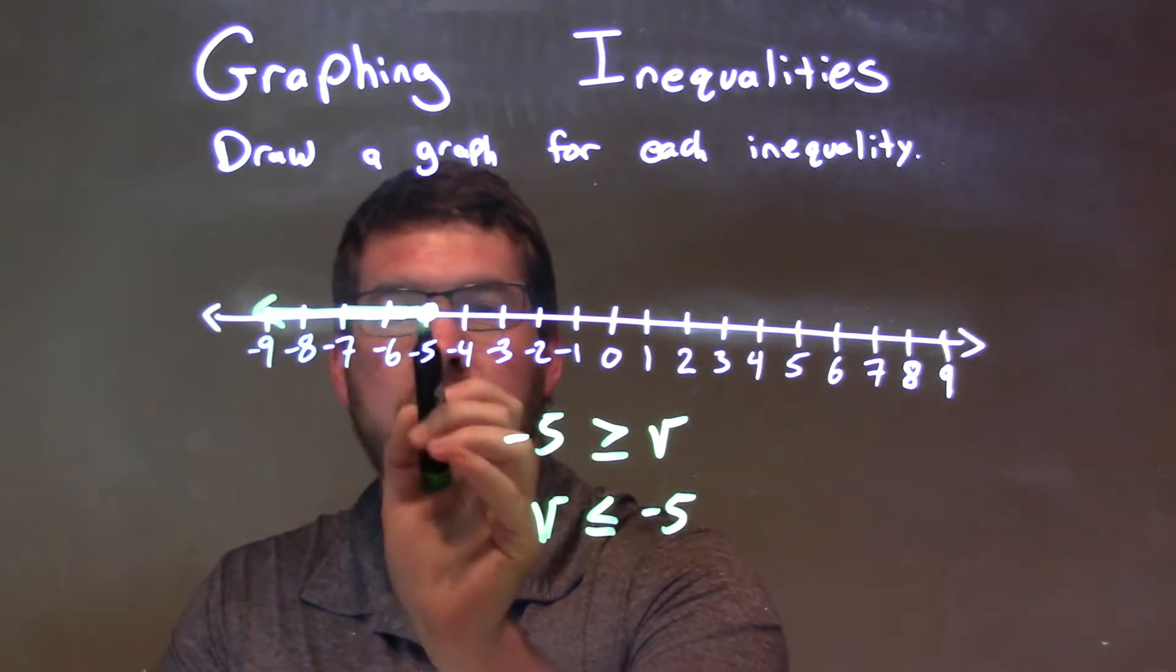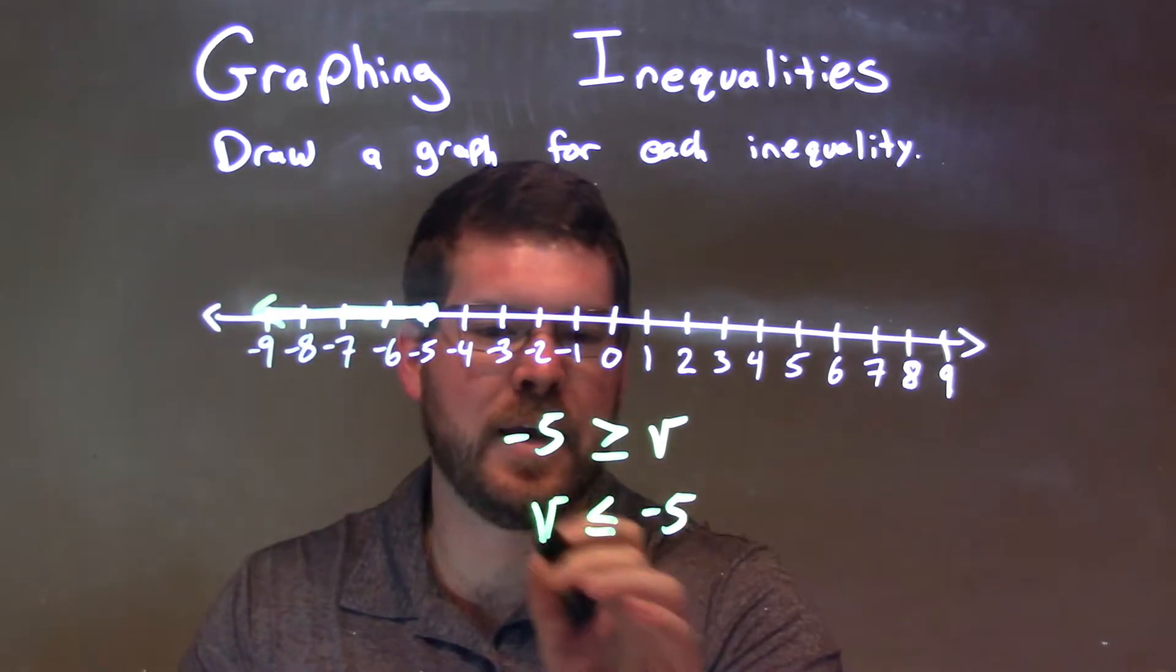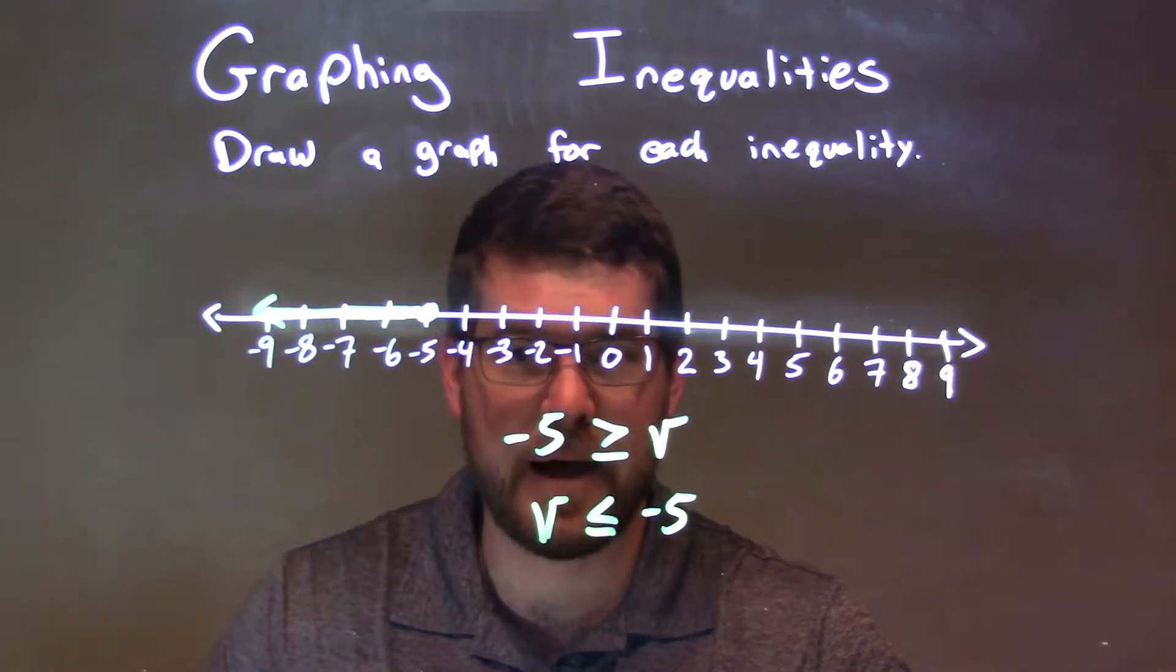Yeah, everything V here, negative 5 is going to be greater than that. So it works both ways. I just find it easier to see it this way, so I always flip it and write it like that.